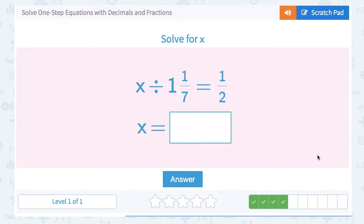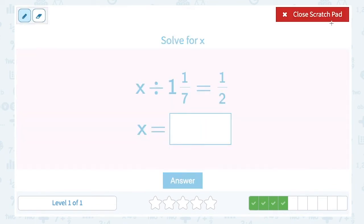Okay, x divided by 1 and 1 seventh equals 1 half. This is a little bit trickier than the last division problem. x divided by 1 and 1 seventh equals 1 half.